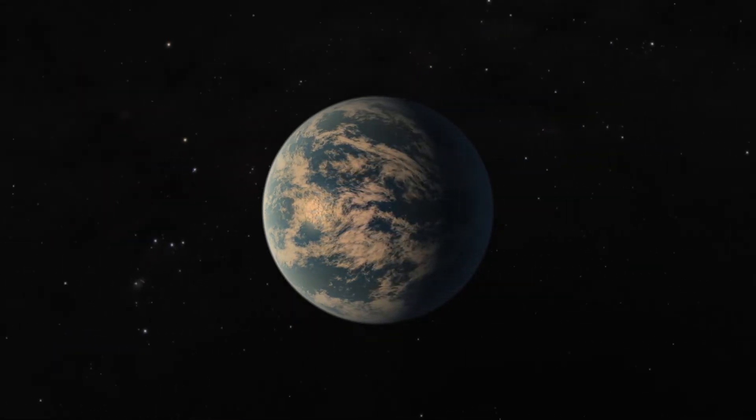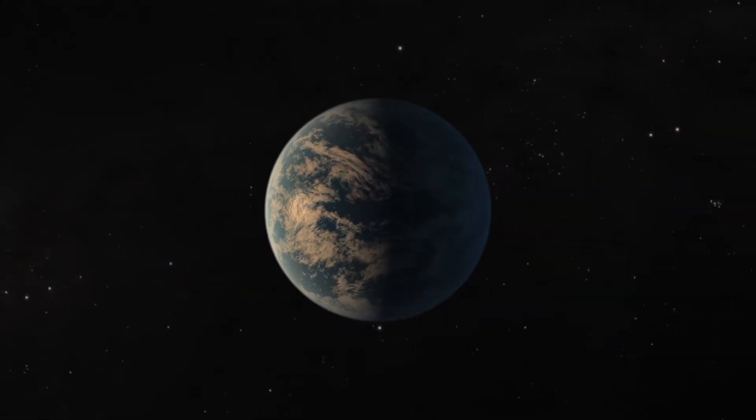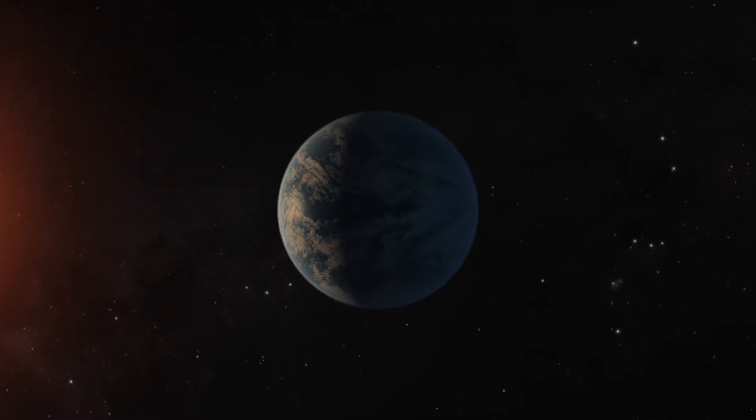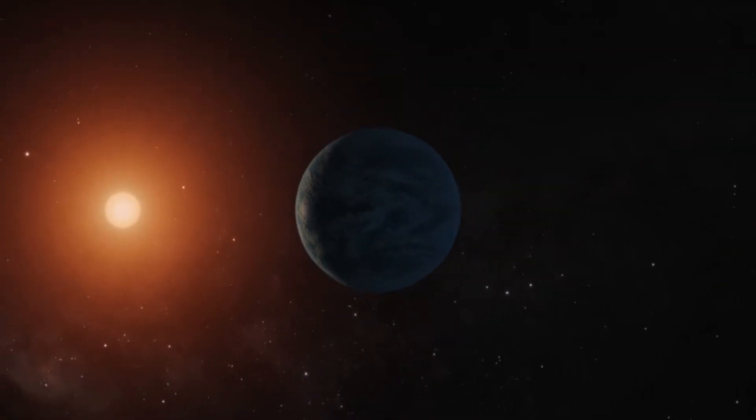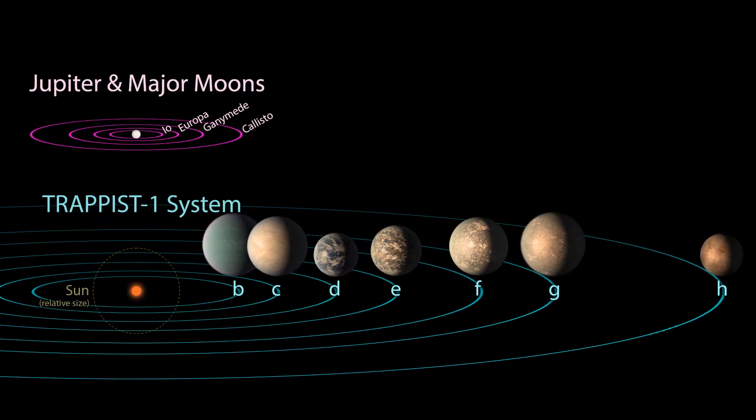But you might wonder, how can we know this about planets we cannot see directly and that orbit an ultra-cool star 40 light-years away that itself is barely bigger than Jupiter?